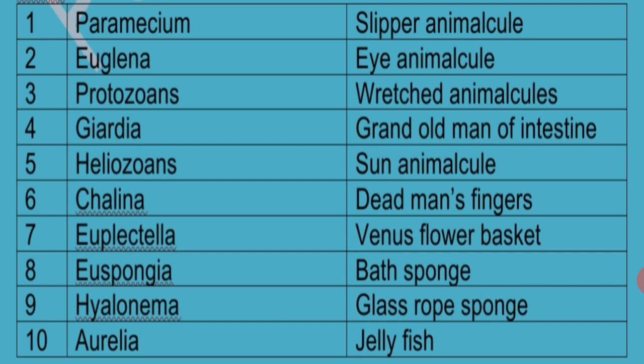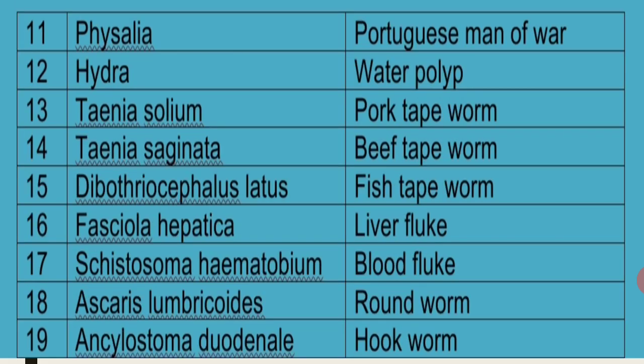Aurelia is a coelenterate and it is commonly called Jellyfish. Physalia is another coelenterate that exhibits polymorphism and is called Portuguese Man of War. Hydra is commonly called Water Polyp.